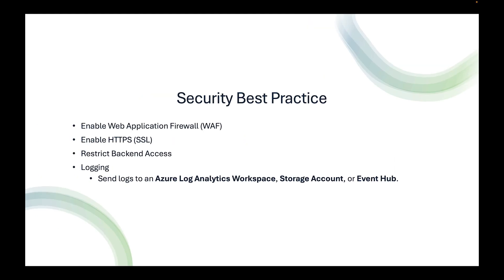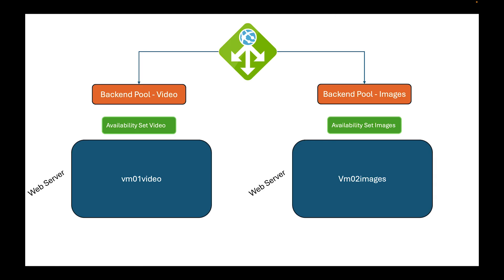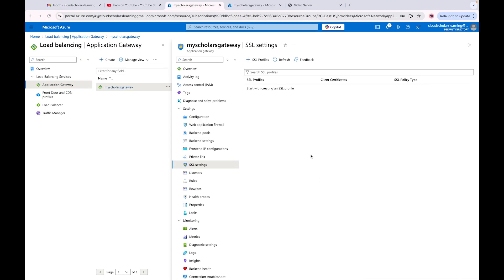The next thing we want to talk about is restricting back-end access. Our application gateway takes in traffic and then sends it to back-end pools. These back-end pools have VMs, and these VMs should be associated with a network security group. We want to make sure that the NSG only allows traffic from our application gateway.